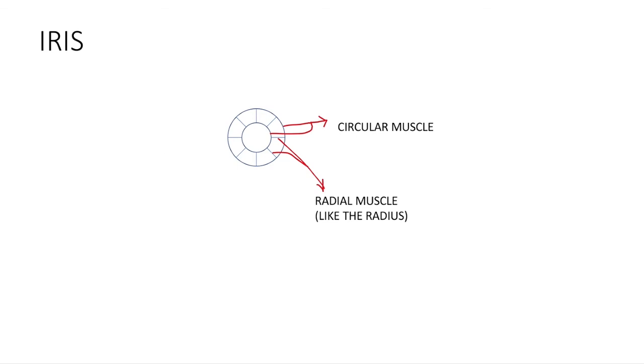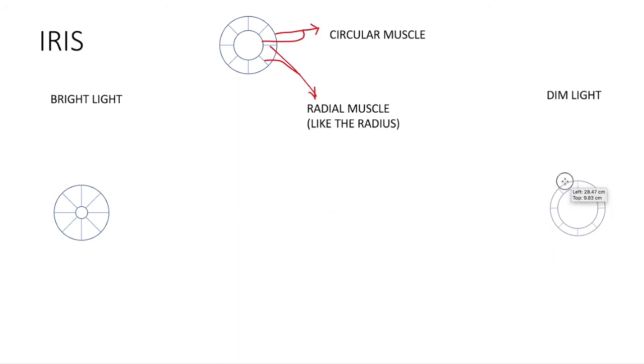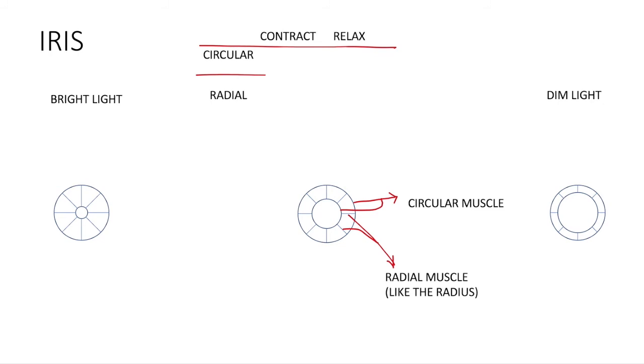So in bright light situation, the pupils will shrink in size to not allow too much light to enter. Therefore, the circular muscles will contract. And in dim light, to allow more light in, the pupil has to enlarge. By doing so, the circular muscles will relax.